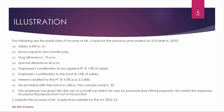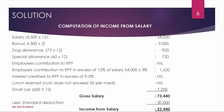Computation for Mr. Gupta: Salary is ₹4,500 per month × 12 = ₹54,000. Bonus equals 2 months' salary = ₹9,000. Dog allowance is ₹75 per month × 12 = ₹900. Special allowance is ₹60 per month × 12 = ₹720.